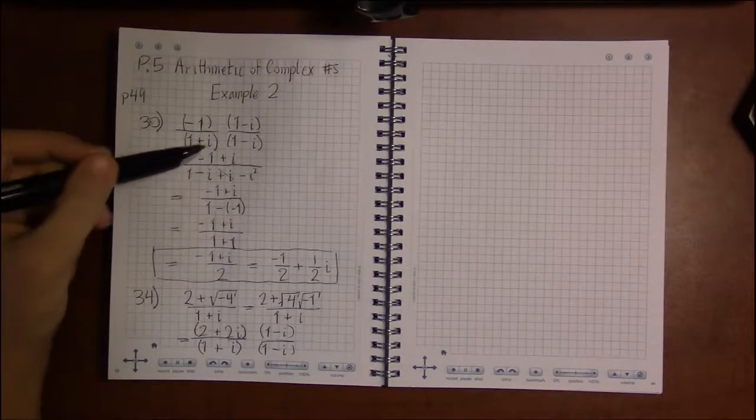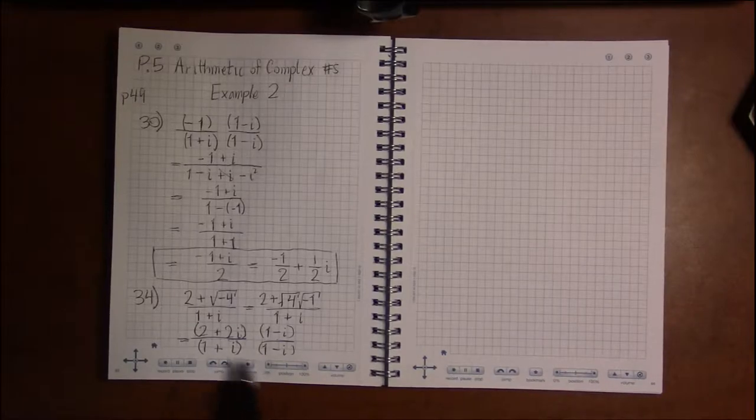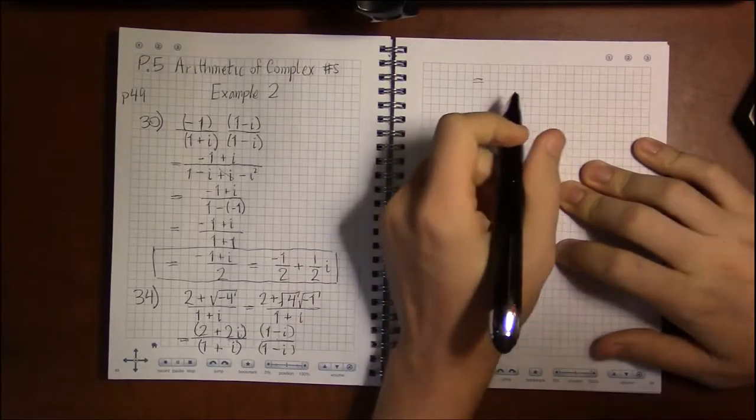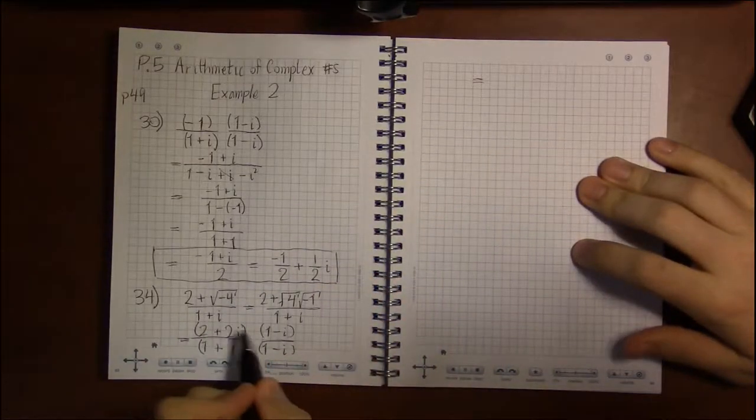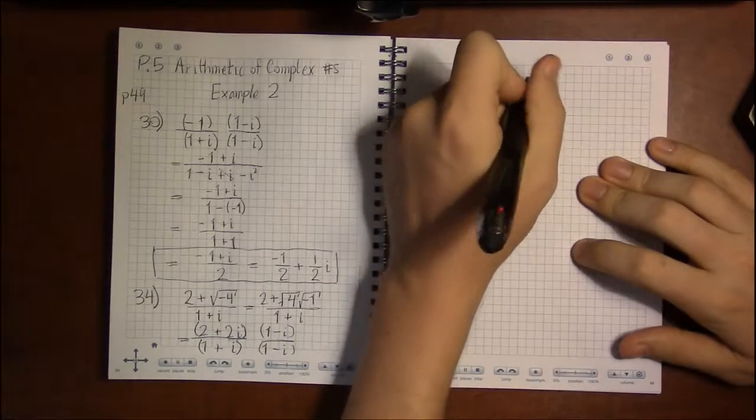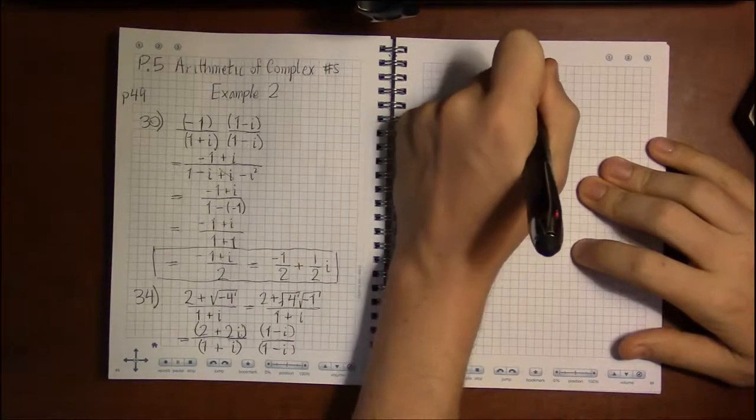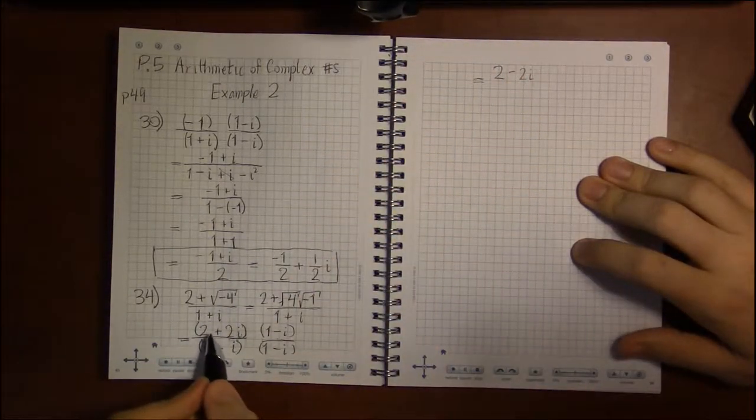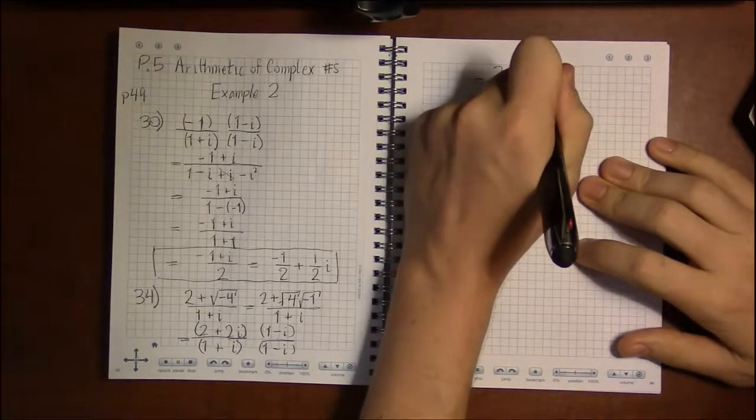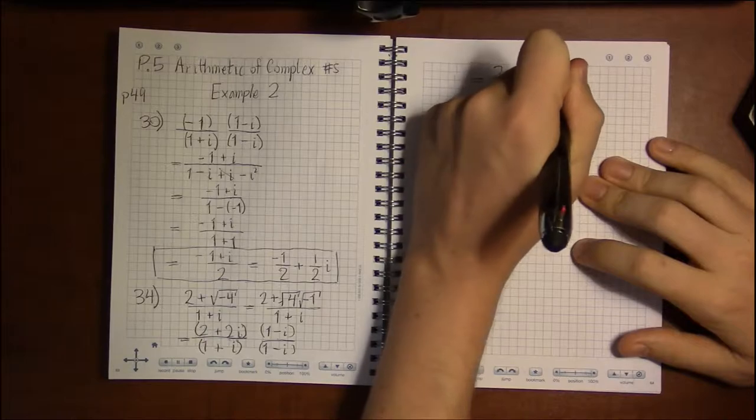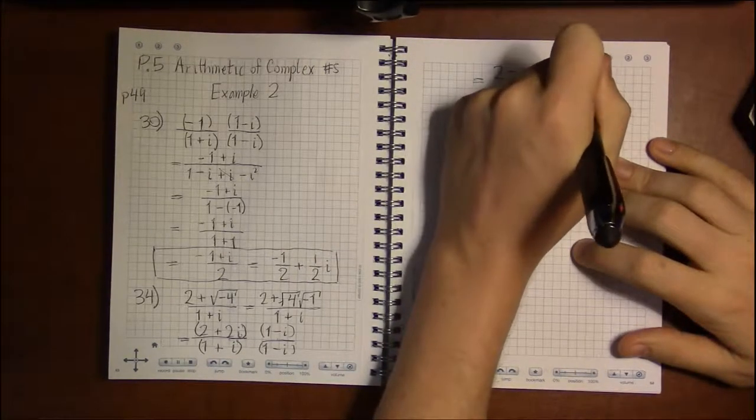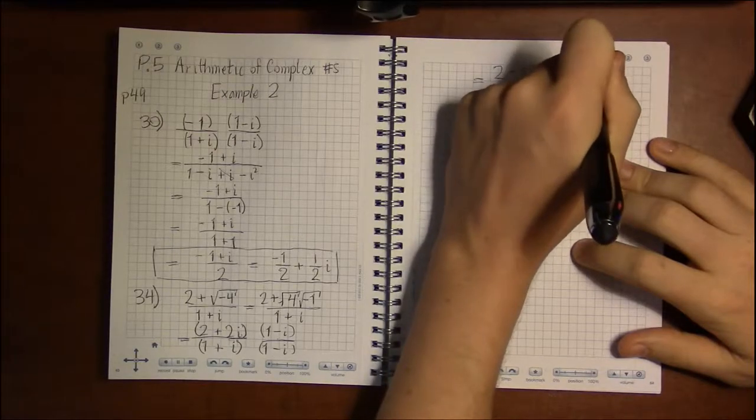And then the next step is distribute, or foil if you will. So 2 times 1 is 2. 2 times minus i is minus 2i. That's it for 2. 2i times 1 is plus 2i. 2i times minus i is minus 2i squared.